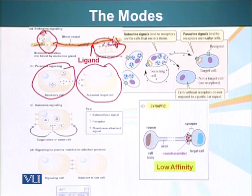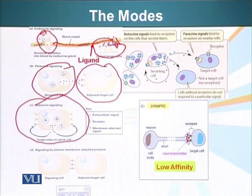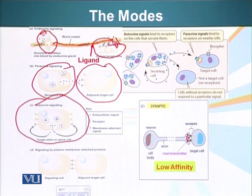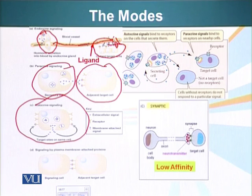Autocrine signaling is more predominant in, for example, the immune system — we will talk about this in more detail when we look at the immune system. Here, the cell is producing the signaling molecule or the ligand, and that same cell has receptors on its surface that can bind that particular ligand. So the cell is producing a signal and responding to itself.